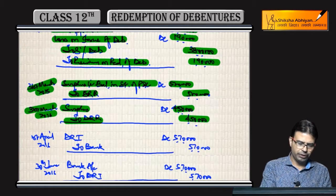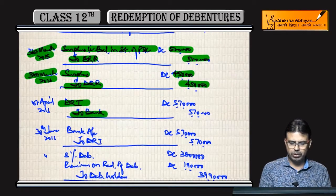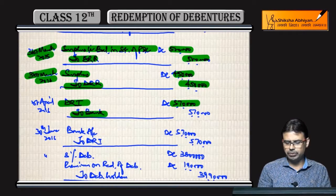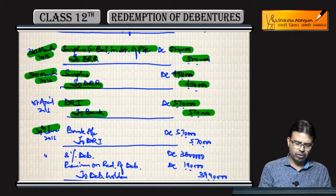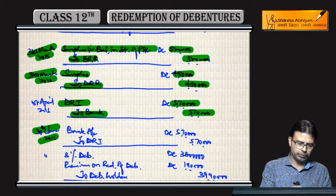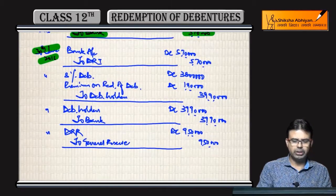Then on 1st April, make the investment: Debenture Redemption Investment A/c debit to Bank A/c — ₹3,80,55,07,000. And then on 30th June, the redemption date arrives.